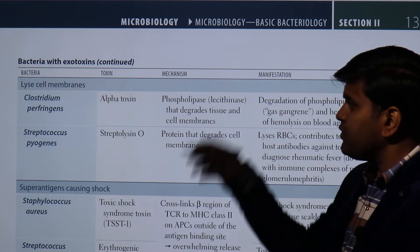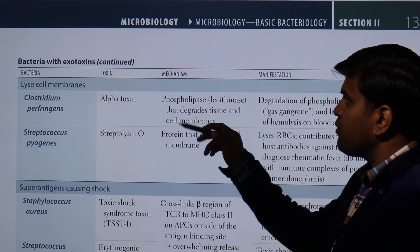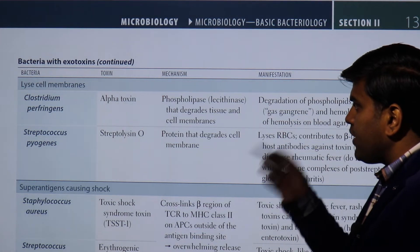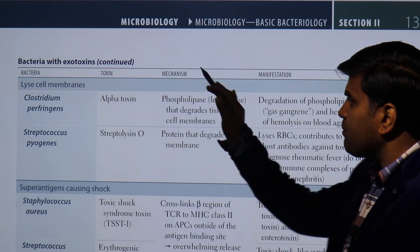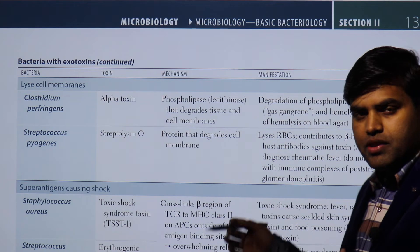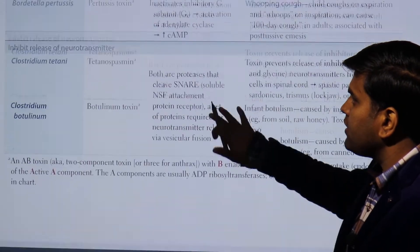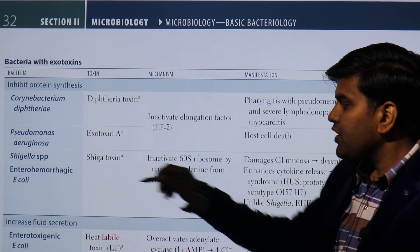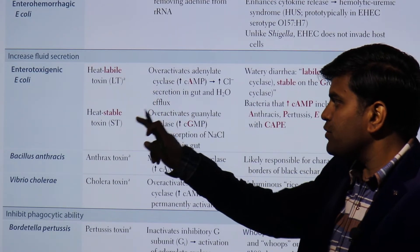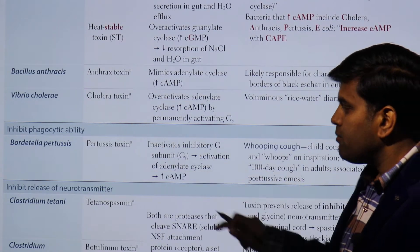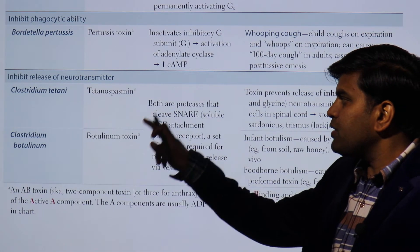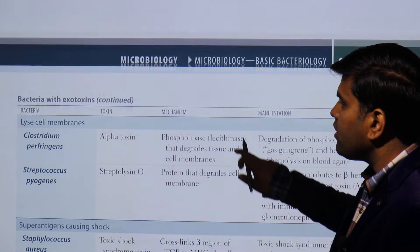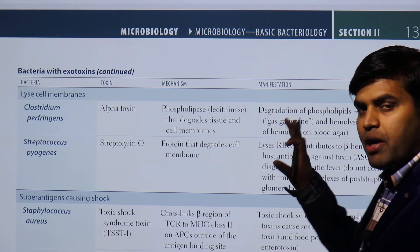Welcome again. Today we are continuing our topic on bacterial exotoxins, now on page 133 — Review Assembly Step 1 by 221 Revision Section. We previously discussed bacterial exotoxins including protein synthesis inhibitors such as Corynebacterium diphtheriae, Pseudomonas aeruginosa, Shigella, and enterohemorrhagic E. coli. There was also increased fluid secretion by enterotoxigenic E. coli, anthrax, cholera, and pertussis, and a group that inhibits neurotransmitter release — the Clostridium group, including Clostridium botulinum and Clostridium tetani.